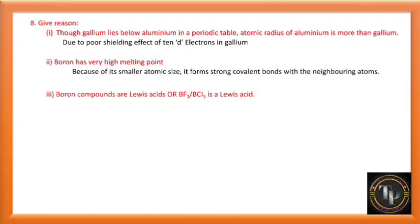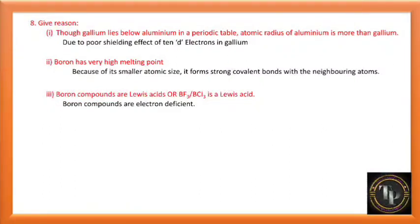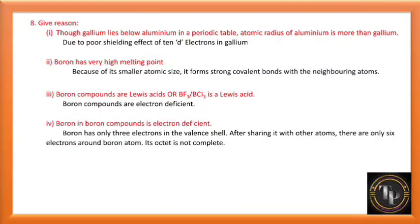Boron compounds like BF3 and BCl3 are Lewis acids. The reason is that boron compounds are electron deficient — they have fewer electrons and want to gain electrons to acquire a stable octet. Boron in its compounds has only three valence electrons; after sharing, there are only six electrons around boron, so its octet is incomplete and it always accepts a pair of electrons.